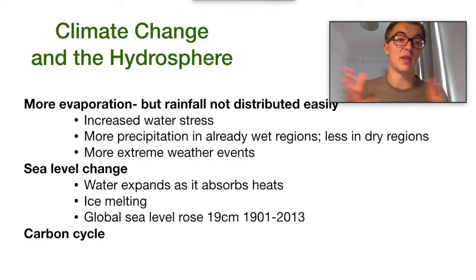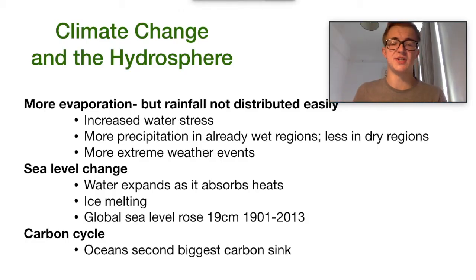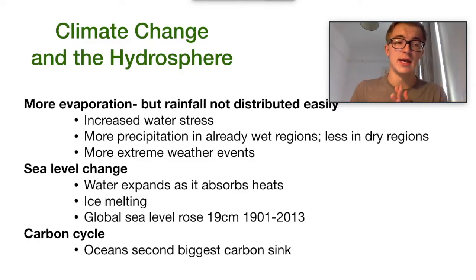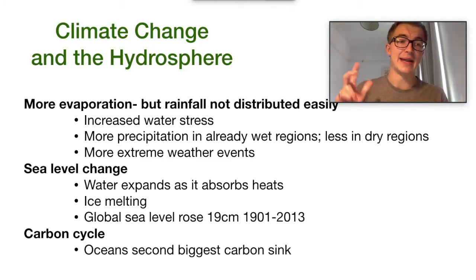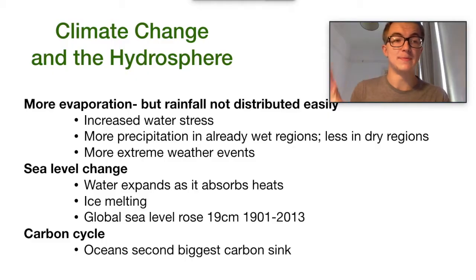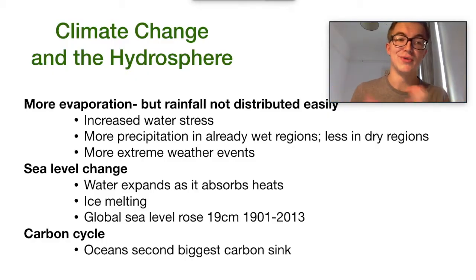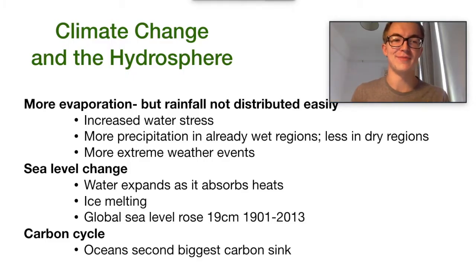The final point on the hydrosphere is the carbon cycle. We need to know that oceans are the second biggest carbon sink on the planet and therefore critical in their role with regards to the carbon cycle. If you're studying biology or ESS, we've got separate videos on this area. But that's all you really need to know for the IB geography syllabus with regards to the hydrosphere.